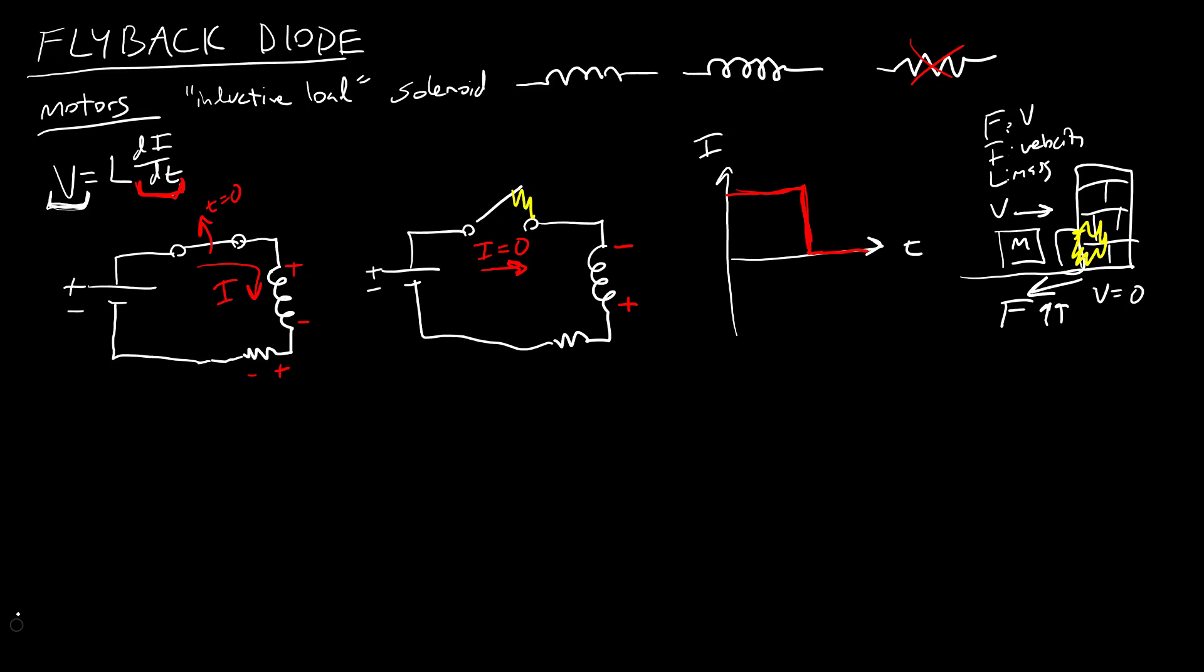I can prevent that by adding something called a flyback diode. So I have my circuit with my switch closed. I still have my inductor and my resistor, but now I am going to add a diode facing kind of backwards across the inductor. So when the switch is closed and current's flowing, this diode is reverse biased and no current flows through there. And so that is zero. Again, we have previous videos covering diodes. A diode acts like a one-way valve for current. So it blocks current from flowing in that direction. All the current is going into my load, my inductor, and everything is fine.